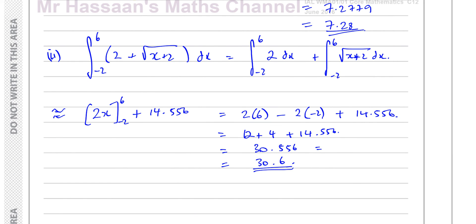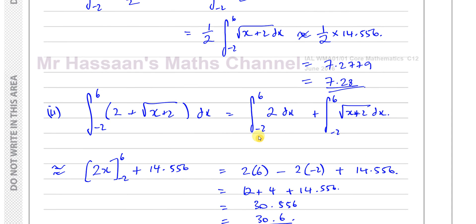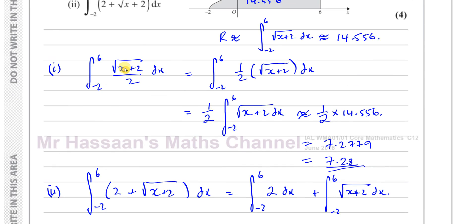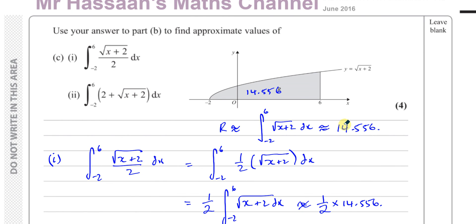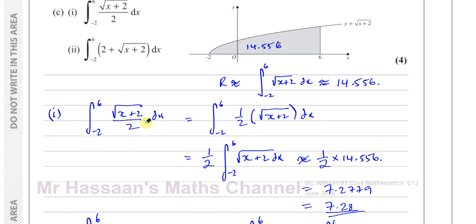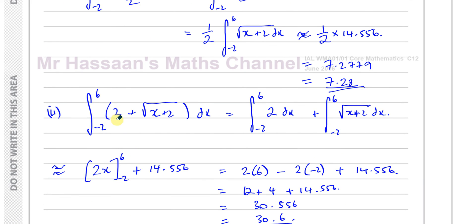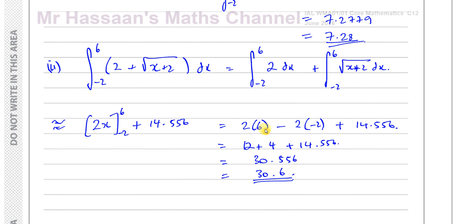So the answer to part C, part 2 is approximately 30.6. The key point of part C is that you should not re-apply the trapezium rule to these new expressions. Instead, manipulate them algebraically so that you isolate the same integral you already estimated in part B, and substitute in that approximate value.